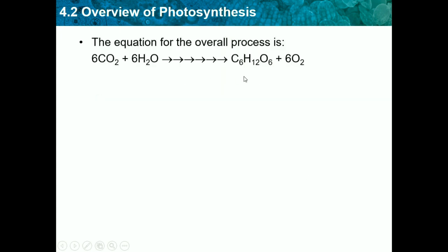The equation for the overall process is: 6CO2 + 6H2O yields C6H12O6 + 6O2. CO2 is carbon dioxide, H2O is water, C6H12O6 is glucose, and 6O2 is oxygen. Sunlight is needed somewhere in between, because you need sunlight to do photosynthesis. The overall goal of photosynthesis is to produce C6H12O6, which is glucose — that's the whole goal.